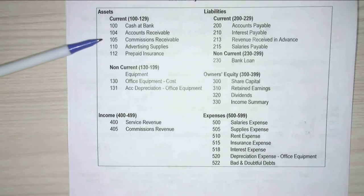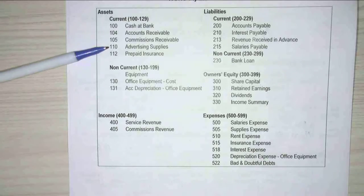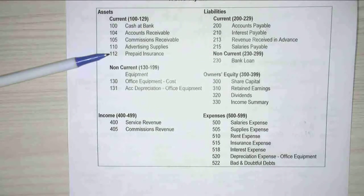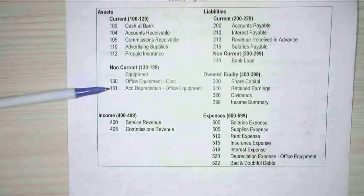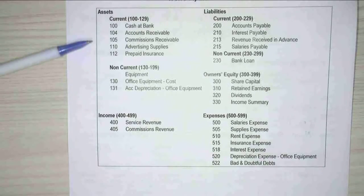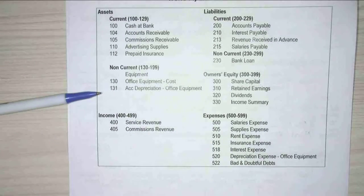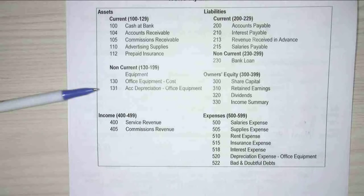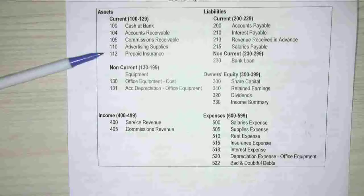And you can see that they're not actually sequential — like we go 100, 104, 105, 110, 112, 130, 131. And it's important that when you build your chart of accounts, you follow a sequential numbering system. Is that so you can add more in the future — like you could put 111 in there?